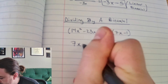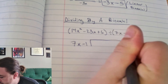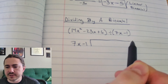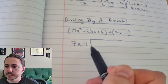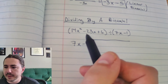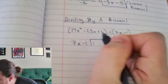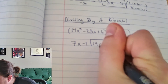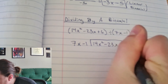First you write the divisor — 7x minus 1 — and then draw the long division symbol like you'd do in elementary school. Inside we write the dividend: 14x squared minus 23x plus 6. The process is: look at this first term and ask yourself what do I need to multiply this first term by to make it equal to this first term in the dividend.